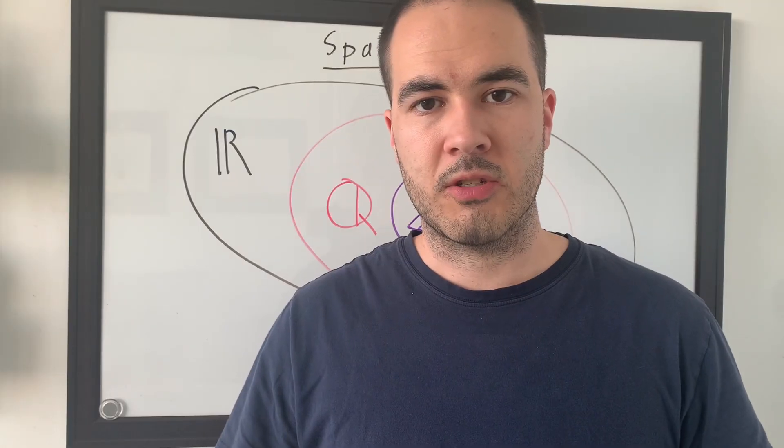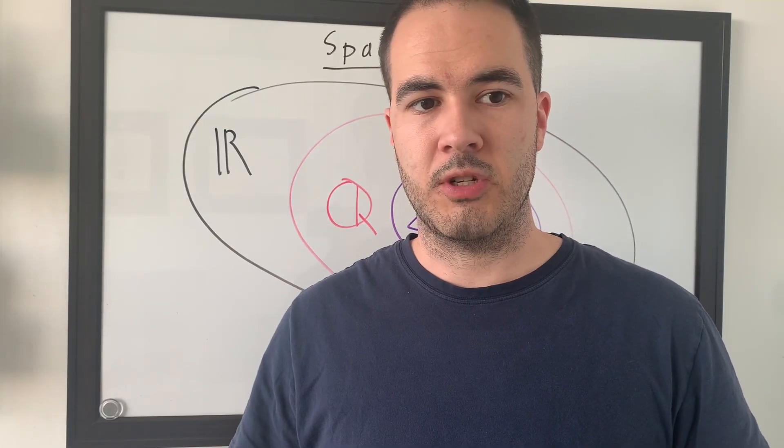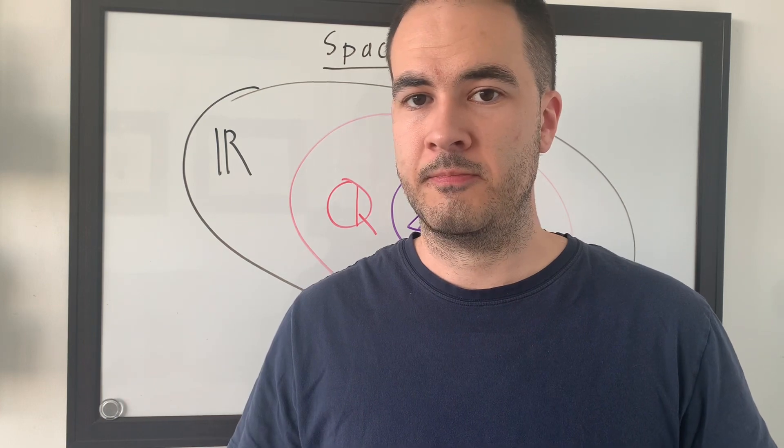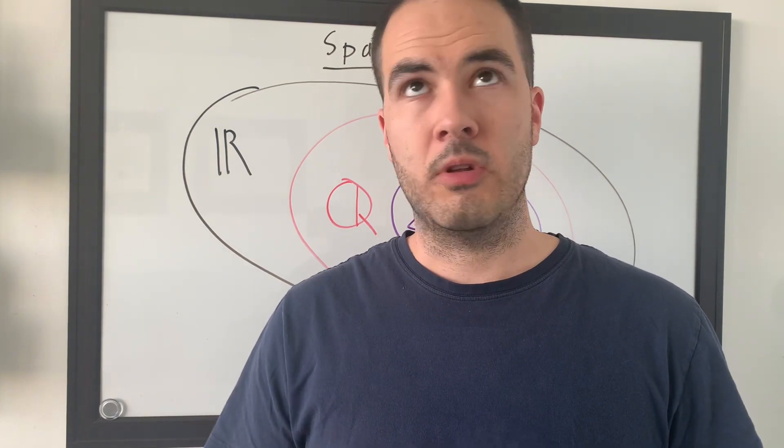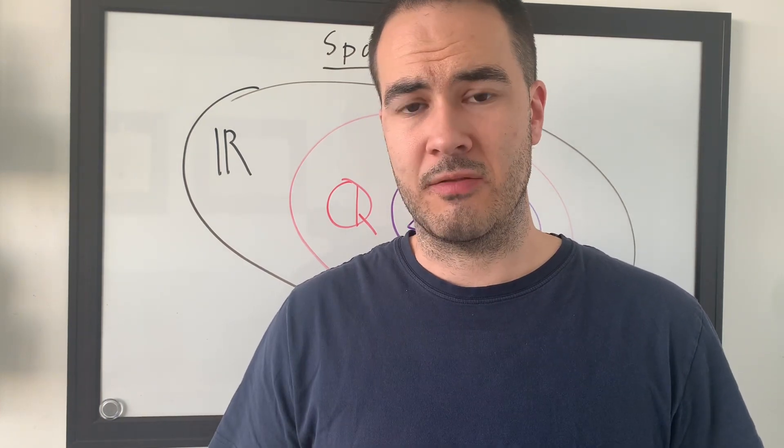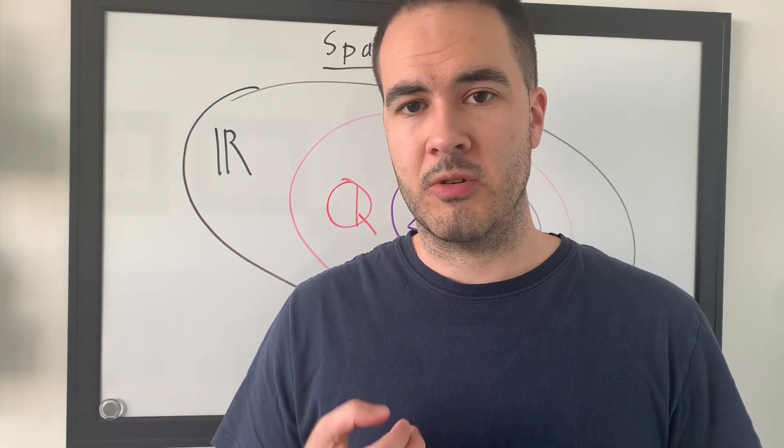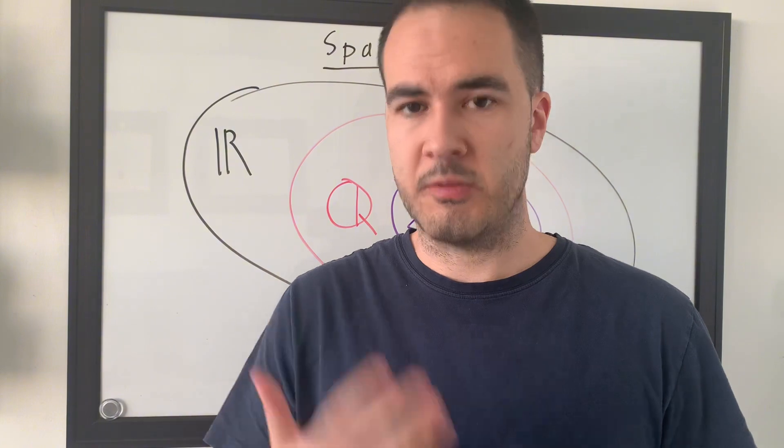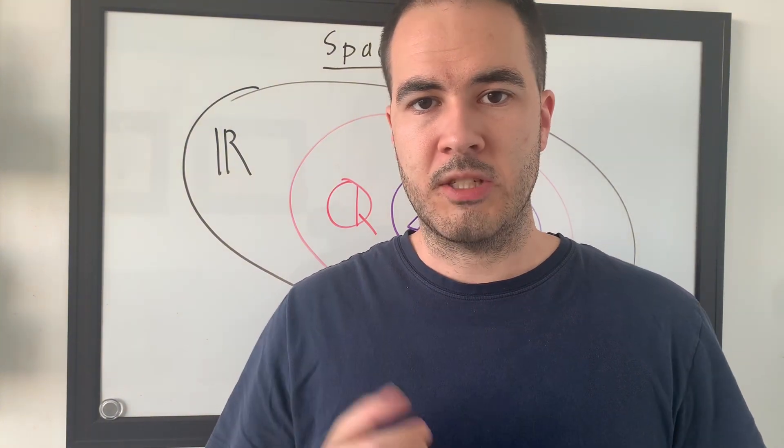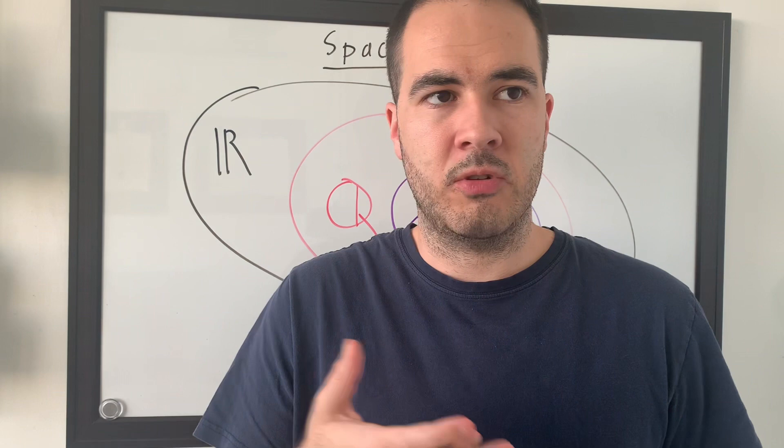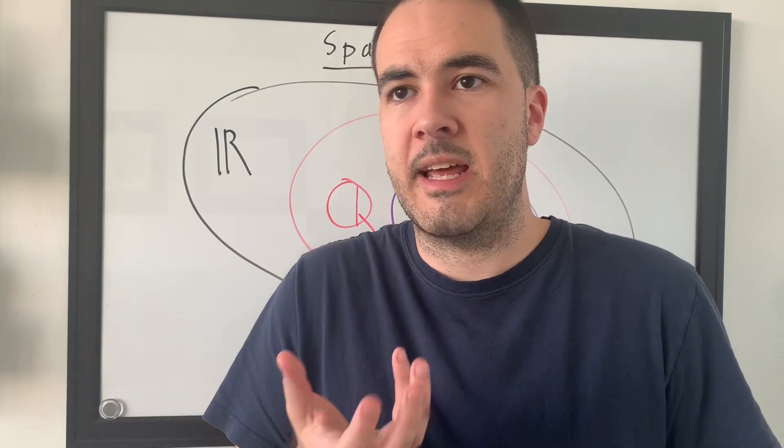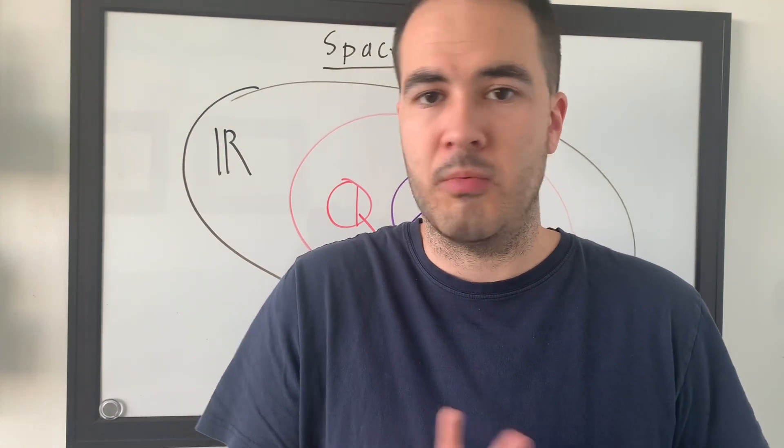So our first topic is going to be Euclidean spaces, which has a short form of Rn. Now, Euclidean spaces is technically just a bunch of math jargon, in my opinion, but it's important for us to understand this idea behind spaces in mathematics. A space in mathematics is a general term to basically describe the set of values a particular variable can have.